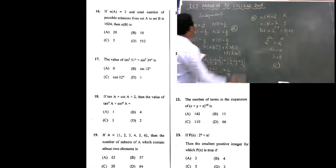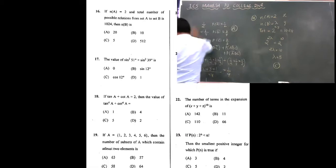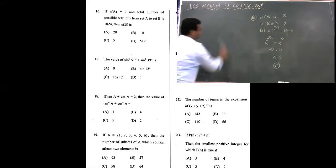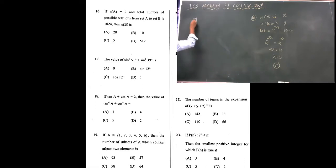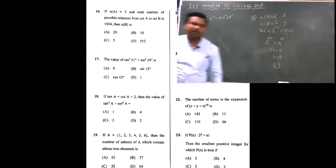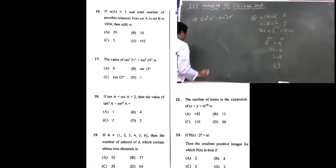Next, the 17th question is based on trigonometric functions. There was not much tricky in this question. The question was, the final value of sin square 51 degrees plus sin square 39 degrees.